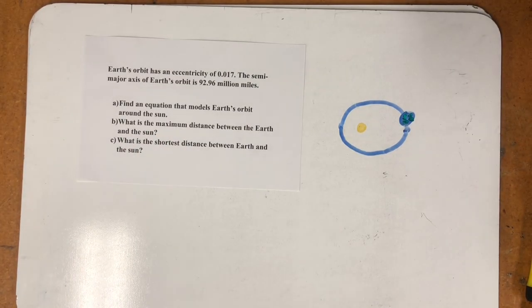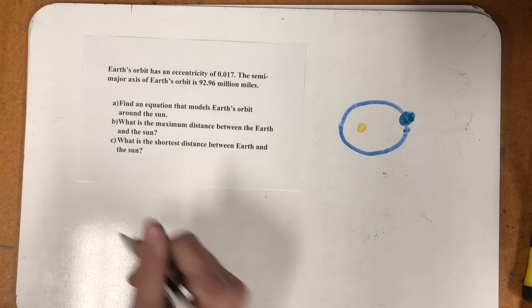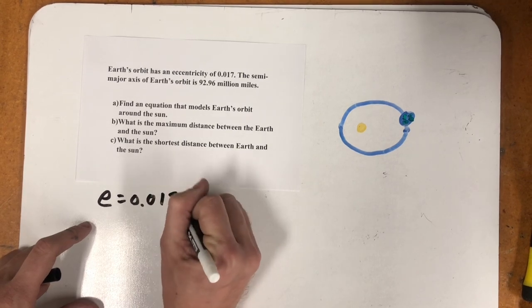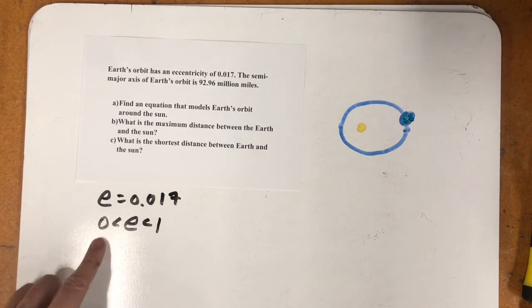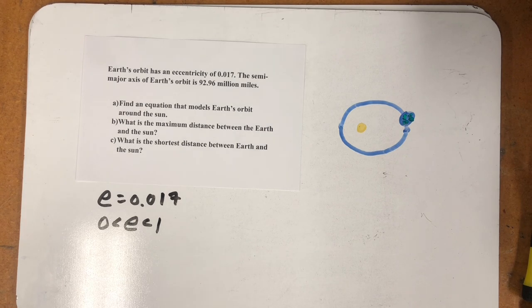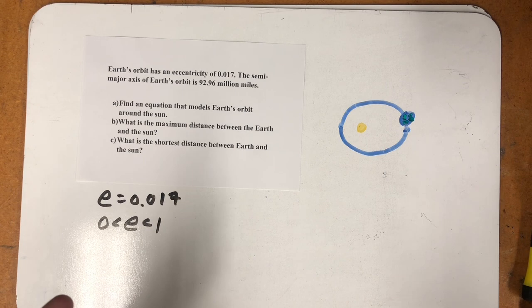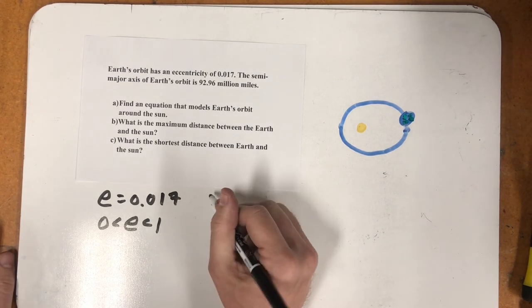So here's a little information about the Earth's orbit. Earth's orbit has an eccentricity of 0.017. Remember, eccentricities are numbers between 0 and 1. The closer we get to 0, the more round, the more circular the ellipse is. So this is telling me that Earth's orbit is really close to being a circle. So I've kind of exaggerated it over here. The semi-major axis of Earth's orbit is 92.96 million miles.